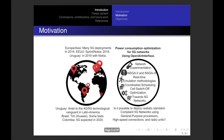Let's continue with the motivation of this thesis. Since 2019, mobile operators all around the world started to implement the 5G generation of cellular networks, but using the non-stand-alone case. In that scenario, 4G base stations and the core are employed as an anchor for the 5G base station called the gNB. If we move to Latin America, the most important country that has already implemented this technology is Uruguay, and other countries in the region started with tests using Nokia and Huawei vendors. Is it possible to deploy realistic standard-compliant 5G networks using general purpose processors, high speed connectors, and routing units?